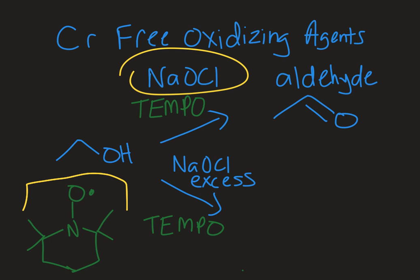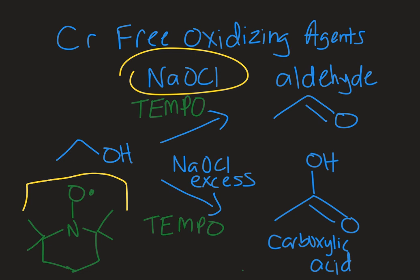If I use excess bleach — if I just flood the system with bleach — then I can oxidize it further and end up with a carboxylic acid. So you can see selectivity between the oxidation state of the product for a primary alcohol. With two hydrogens on a primary alcohol, depending on what conditions I use, I can selectively oxidize to an aldehyde or to a carboxylic acid. Let's go to the next page and look at an intermediate that shows how this reaction proceeds.